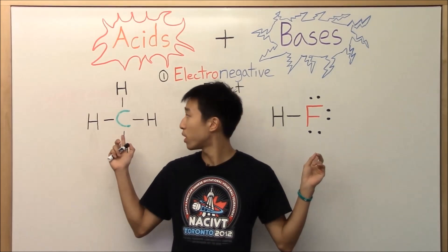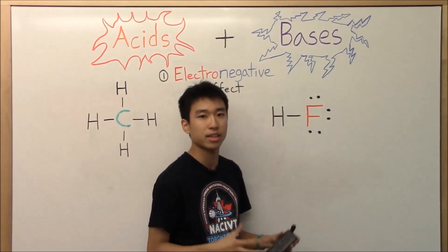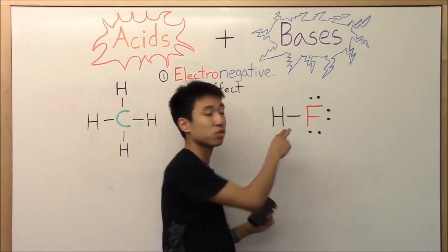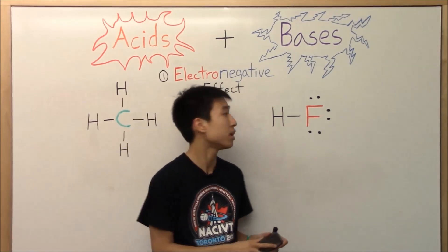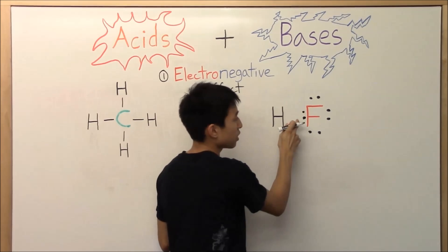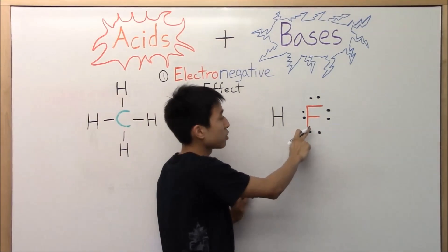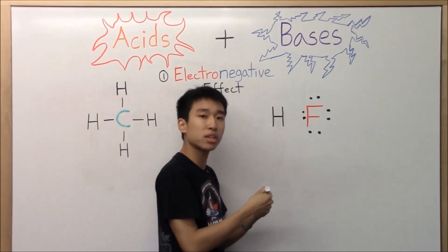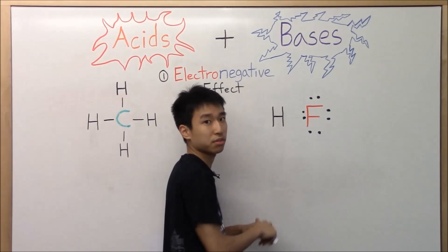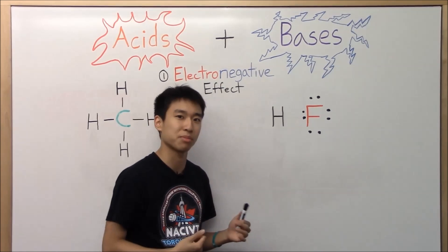These two molecules look like this on paper, but what you really need to understand is that it's not actually like this. You need to see where the electrons in the two bonds actually are. This bond over here actually looks like this — notice how the two electrons in the bond are so far away from the hydrogen and so close to the fluorine. That's because fluorine is very electronegative, so it pulls all the electrons in the bond towards itself. It's very greedy, basically.